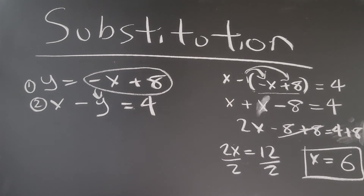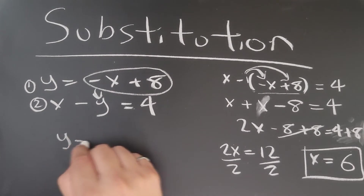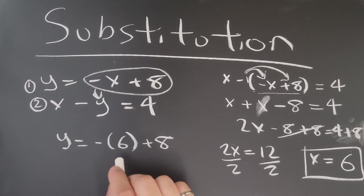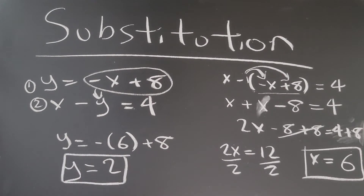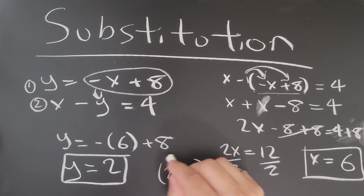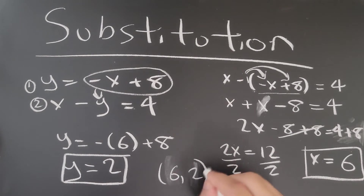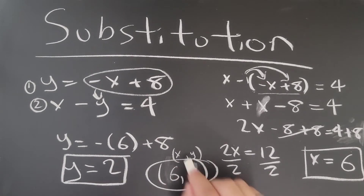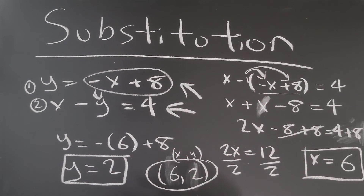Now that we have x, we can plug that back into equation one: negative 6 plus 8 gives us y equals 2. So now we know that at the point 6 comma 2 — that is the point at which these two equations will intersect.